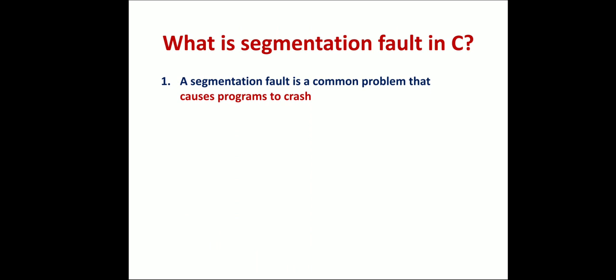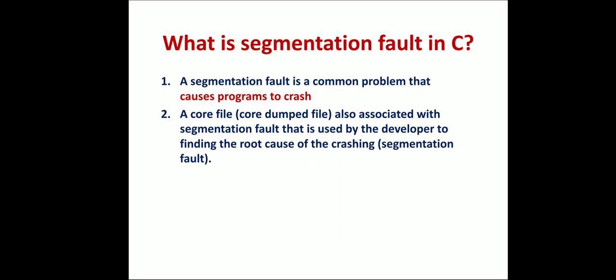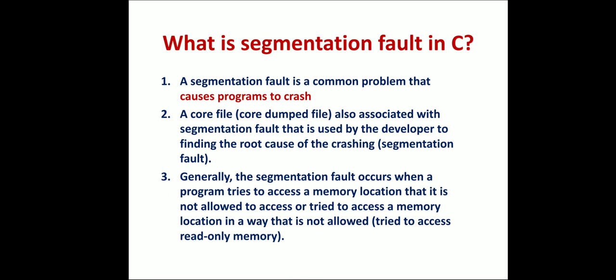The first question is: what is a segmentation fault in C? A segmentation fault is a very common fault that causes a program to crash. A core dump file is also associated with the segmentation fault, and it is used by the developer to find the root cause of the crash. Generally, a segmentation fault occurs when a program tries to access a memory location that is not allowed or not accessible by that program — then it will crash the program itself.